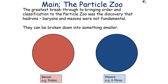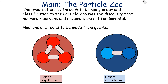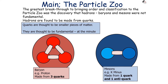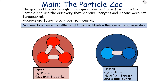The greatest breakthrough to bringing order to the particle zoo was the discovery that hadrons, baryons, and mesons were not fundamental — they could be broken down into something smaller. Hadrons are found to be made from quarks. Quarks are thought to be smaller pieces of matter and are currently thought to be fundamental, but that may change with further breakthroughs. Baryons are made from three quarks, so the proton is made from three quarks, and mesons are made from one quark and one antiquark.